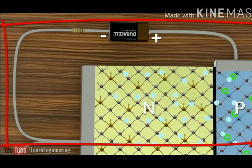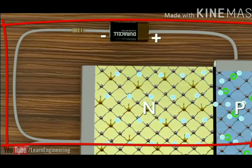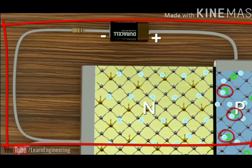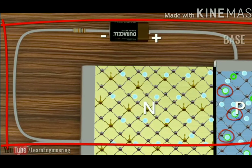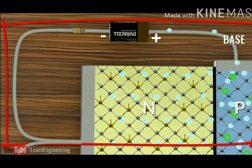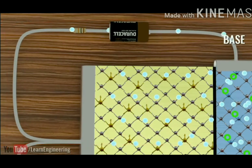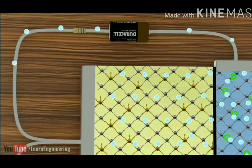Electrons from the N-type region are influenced and flow toward the P-type region. Similarly, holes in the P-type region are also influenced, and flowing through the emitter, they return back through the first N-type layer.